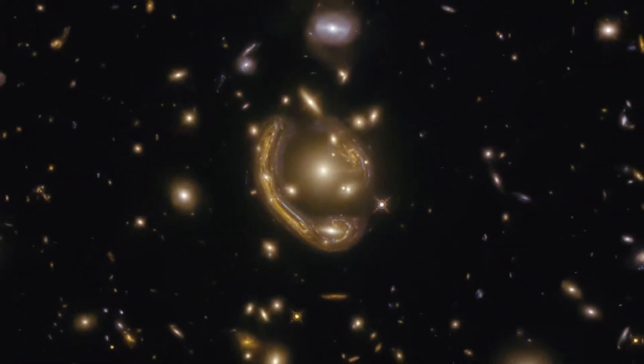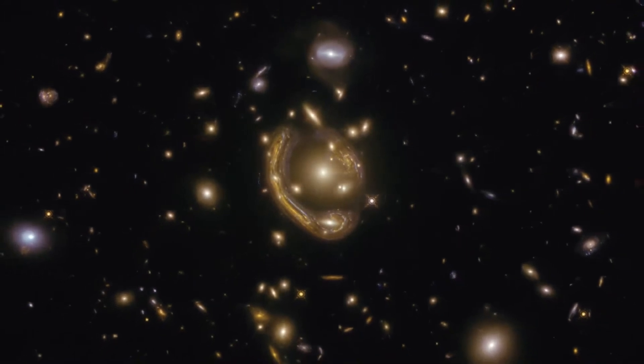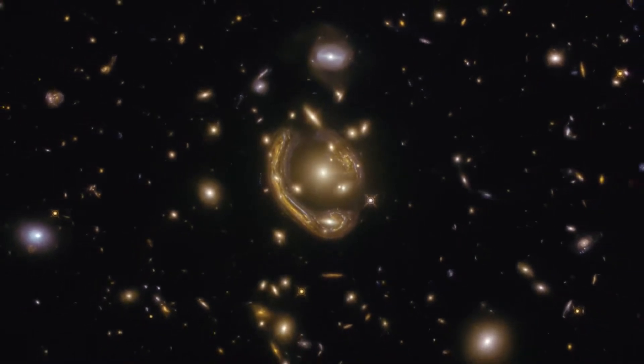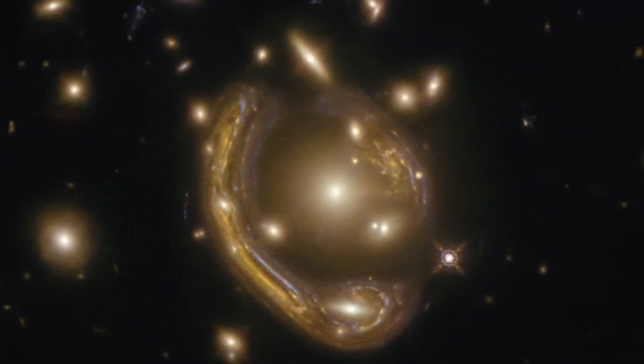This image, taken with the Hubble Space Telescope, shows a distant galaxy located in the constellation Fornax. It is the largest and one of the most complete Einstein rings ever discovered.